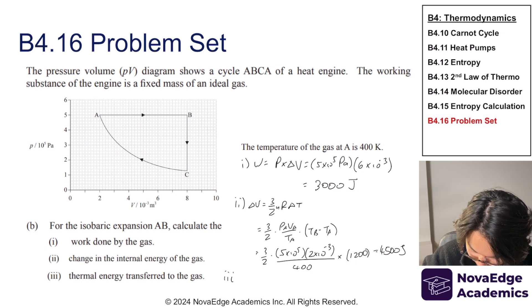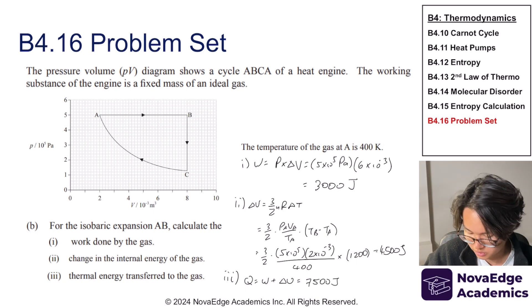And part three, thermal energy transferred to the gas. Well, I know Q is equal to W plus delta U, which is 7,500 joules. Perfect. All right, let's move on to part C.